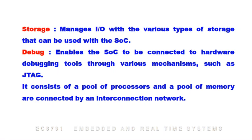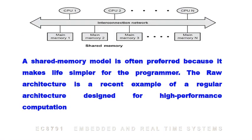It also includes support for Java. The system consists of a pool of processors and a pool of memory connected by an interconnection network — this is a shared memory model. The block diagram shows CP1, CP2, through CPN connected via an interconnection network.